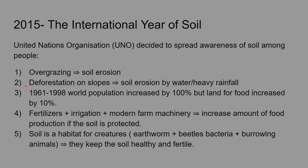The second issue is deforestation. When deforestation is done on slopes, there are no more tree roots to hold the soil, so soil erosion can easily occur through water or wind.